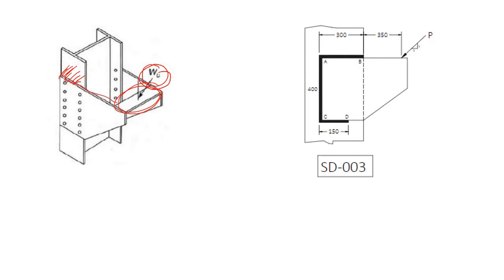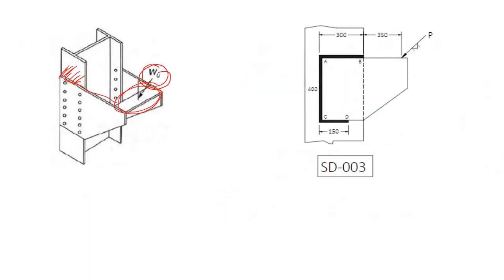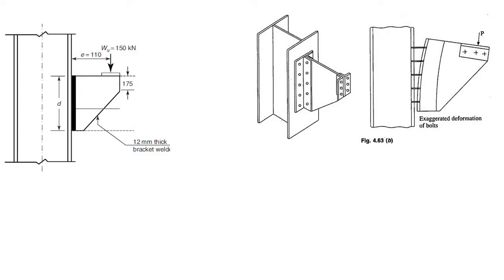In the first case, the load was acting along the major axis of the column — the load acts about this major axis. In the second case, the load is being applied along the minor axis. This is another situation where you need to provide a bracket to support the point load.